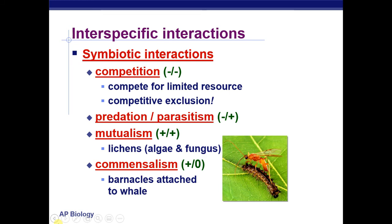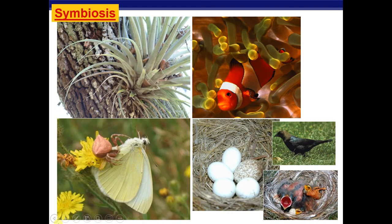For example, barnacles attached to a whale: the barnacles benefit because they get to take in nutrients from the whale feeding, and the whale is not really affected because the attached barnacles don't harm it in any way. Think of all these examples of symbiotic relationships — cuttlefish and anemones, a spider eating a moth, a species of bird that lays its eggs in other nests.